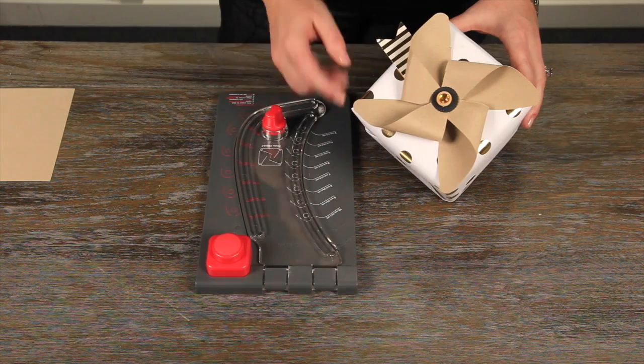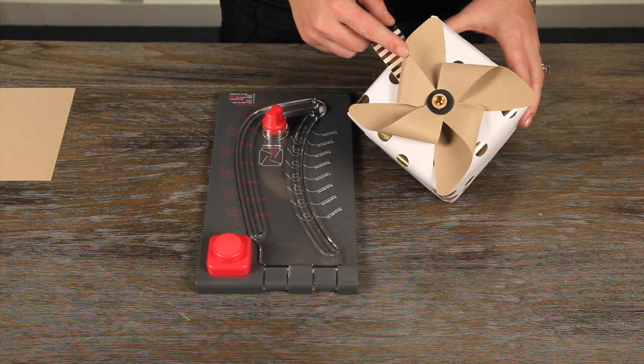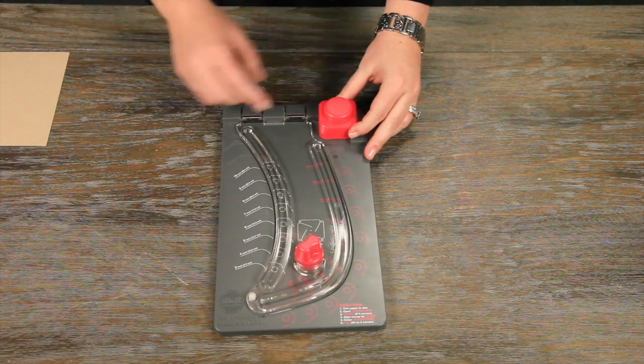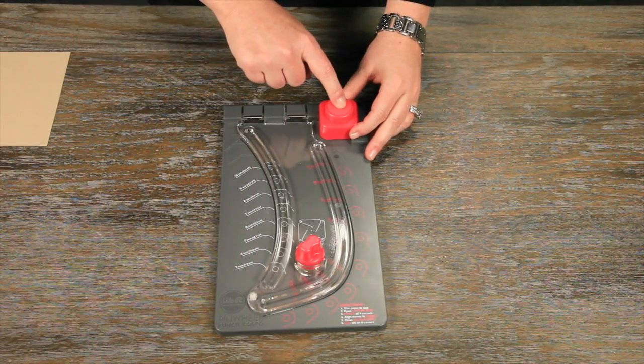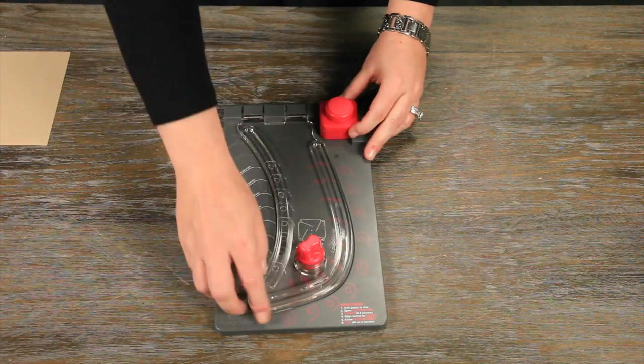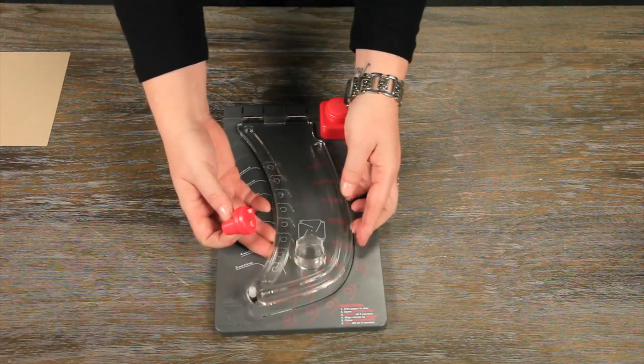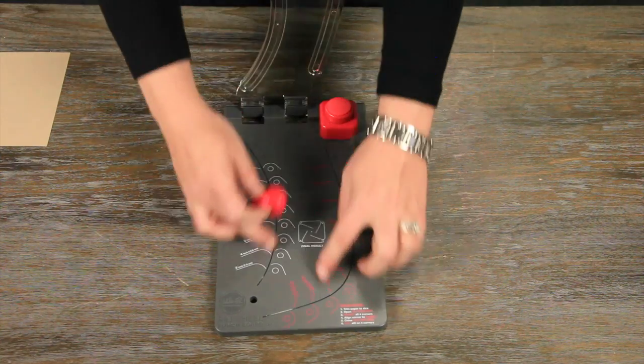So we're going to start by making this simple pinwheel that you can put on top of your gifts. The pinwheel punch board has the hole cutter and notch maker, the cutting piece as well, the swinging arm, and the guides.